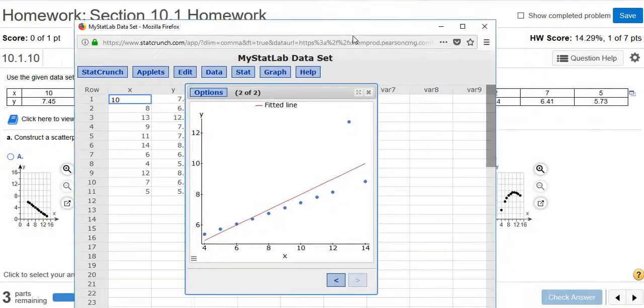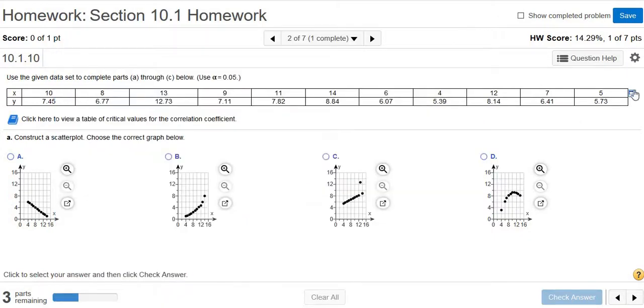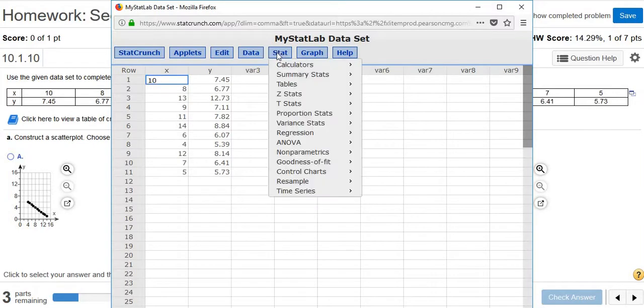So now we have to look for the correct picture. Let me do that again in case you blink. So click this, Open in StatCrunch, then it's Stat, Regression, Simple Linear.